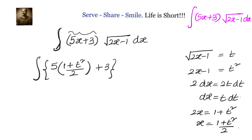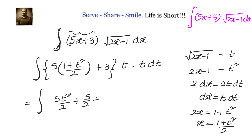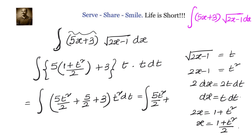We multiply (5x + 3) with the square root of (2x - 1), which is t, and dx, which equals t dt. Converting the full integral from x to t, we get the integral of [5(1 + t²)/2 + 3] times t squared dt, which expands to 5t²/2 + 5/2 + 3 times t squared dt.